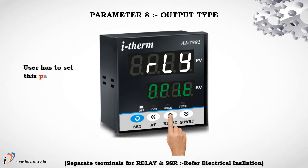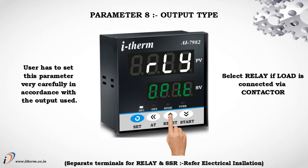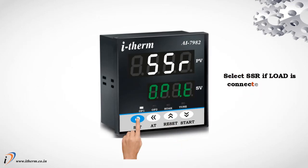Parameter 8: Output type. User has to set this parameter very carefully in accordance with the output used. Select relay if load is connected via contactor. Select SSR if load is connected via SSR.